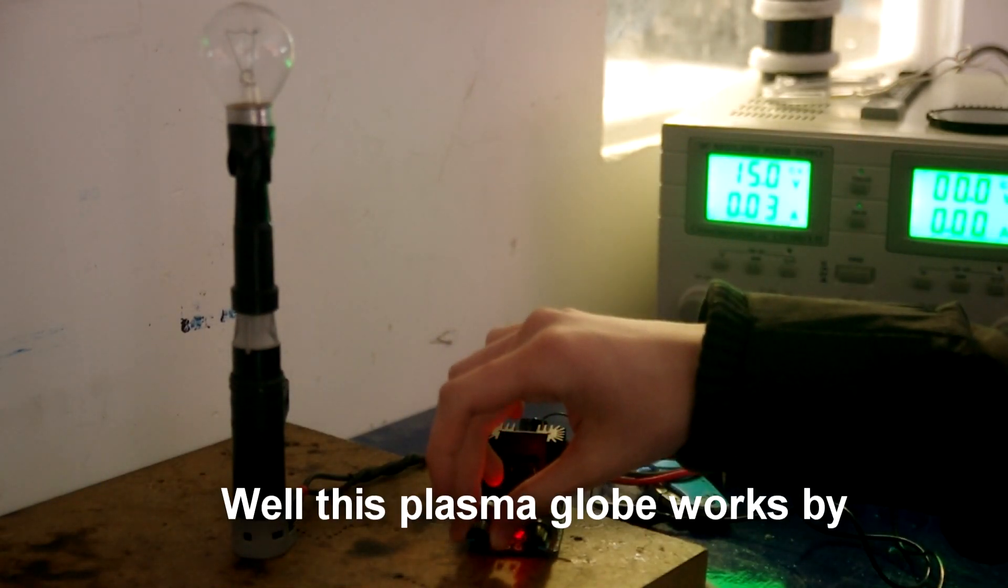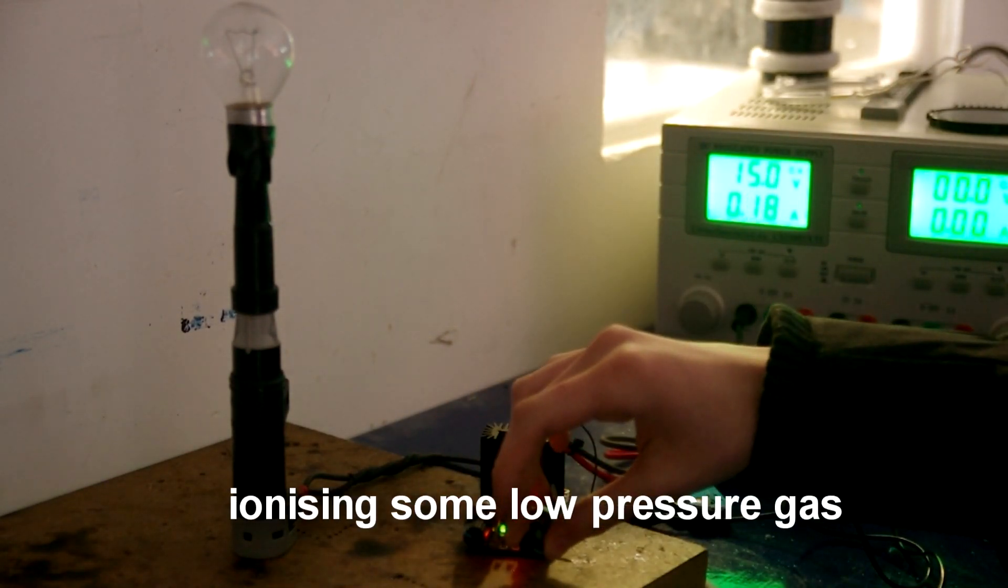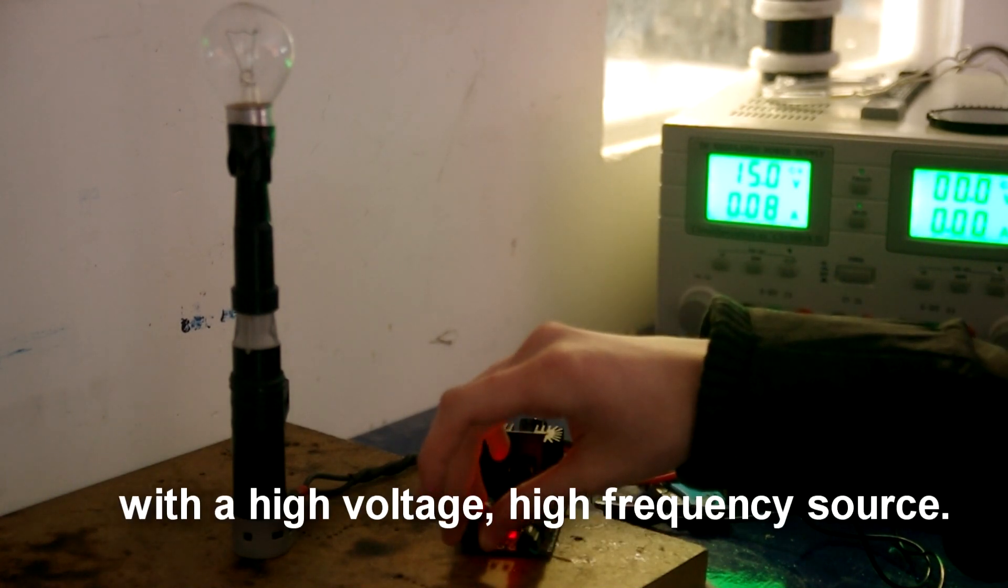How does it work you ask? Well this plasma globe works by ionizing some low pressure gas inside a light bulb with a high voltage high frequency source.